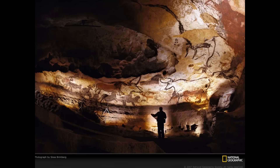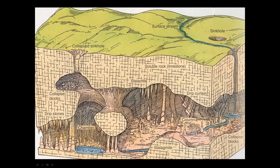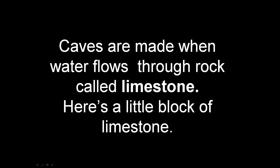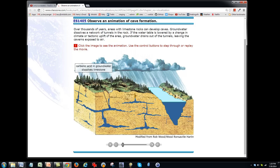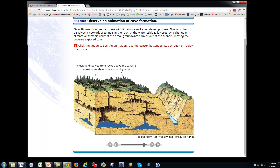Let's open up a cave and look inside. Caves are made when water flows through rock called limestone. Here is a little block of limestone. And look at this cave formation video. Carbonic acid in the groundwater dissolves the limestone. The water table is lowered, and limestone dissolved from rocks above the caves is deposited as stalactites and stalagmites.